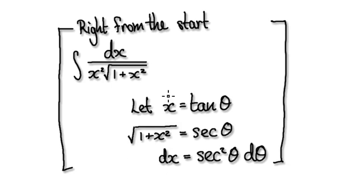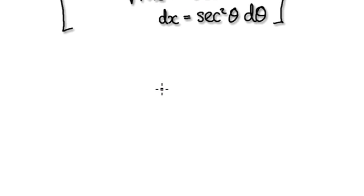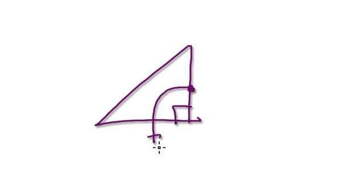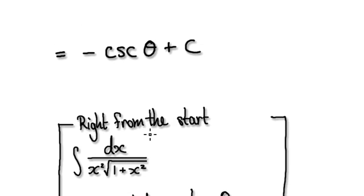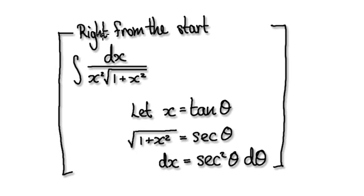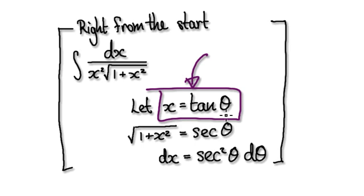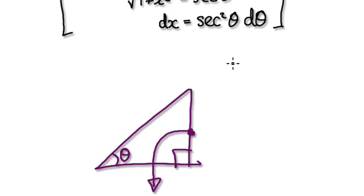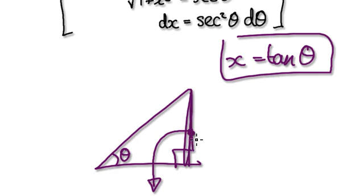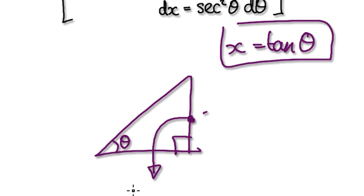Looking back at our initial substitution, we need to create a scenario such that this statement is true. We've used this approach before. So, x equals tan(theta). We need to create a scenario where that is true. This here is 10 — tan — so this here is tan.